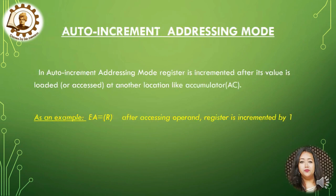In auto-increment addressing mode, the register is incremented after its value is loaded or accessed at another location like the accumulator. For example, EA = R, which means after accessing the operand, the register is incremented by 1.